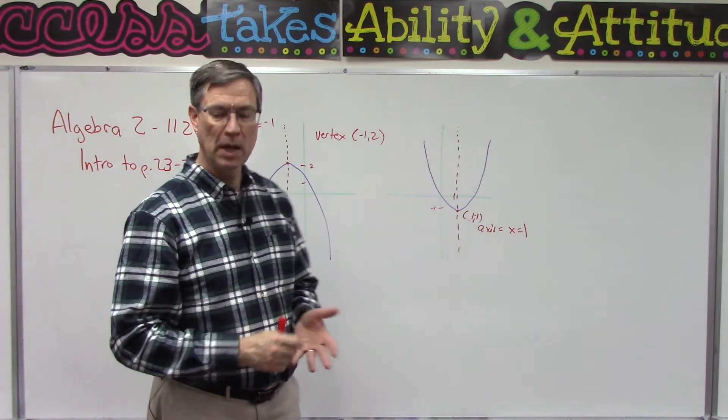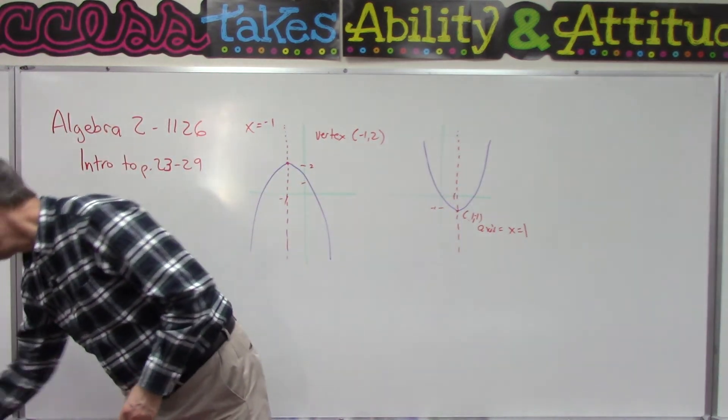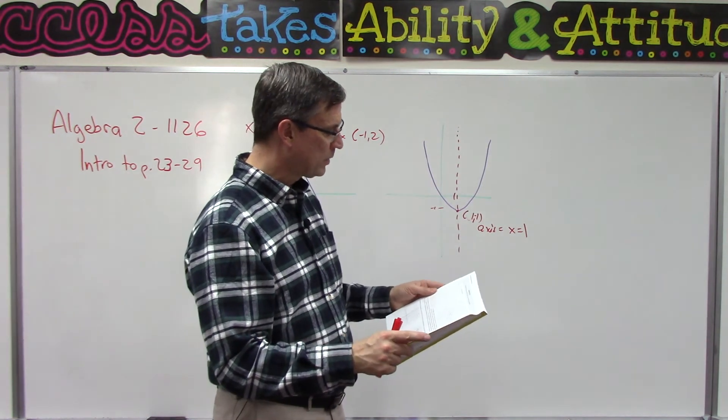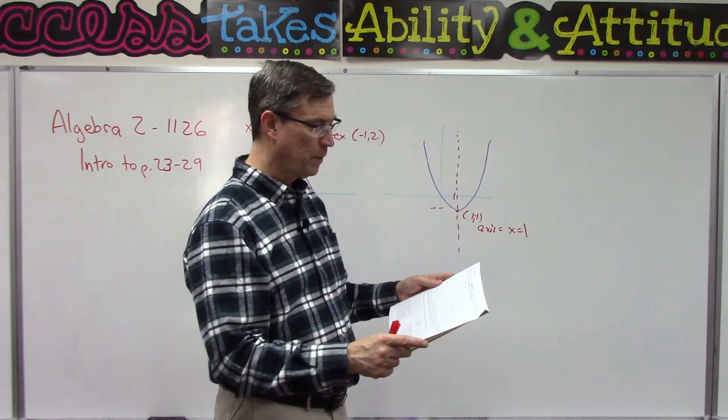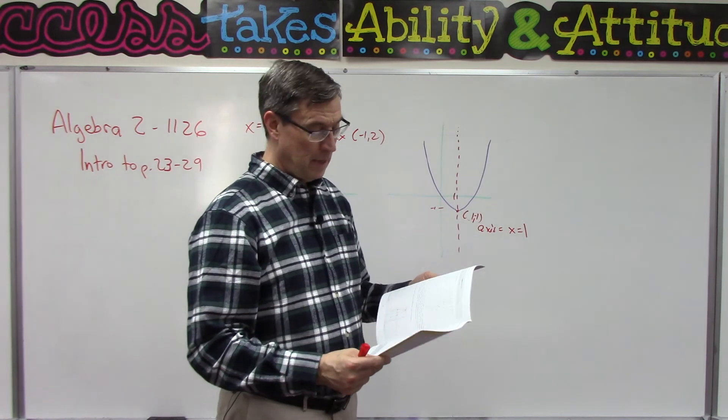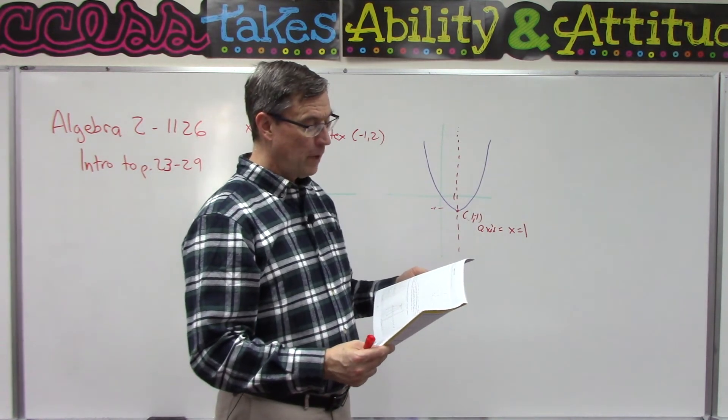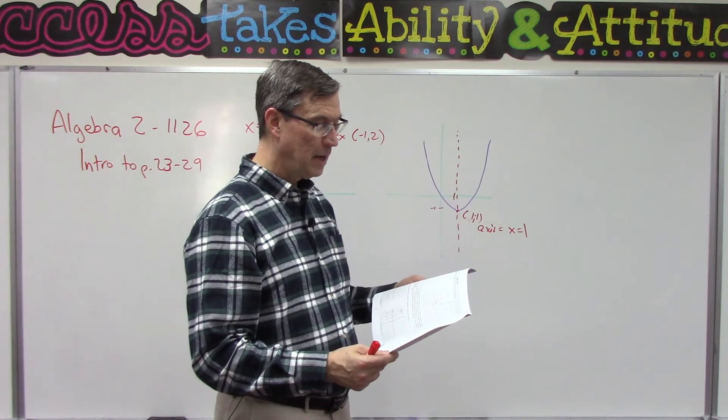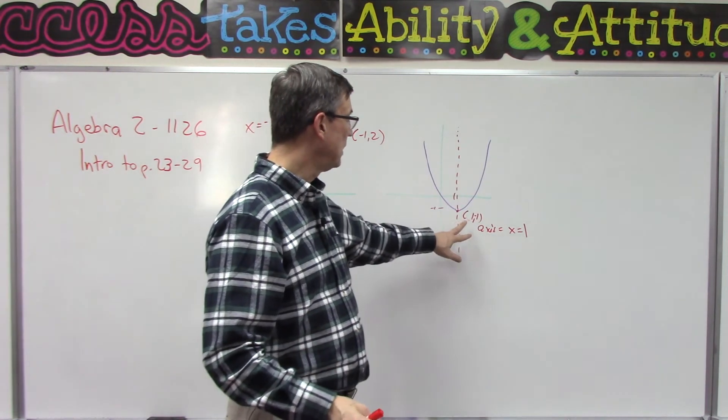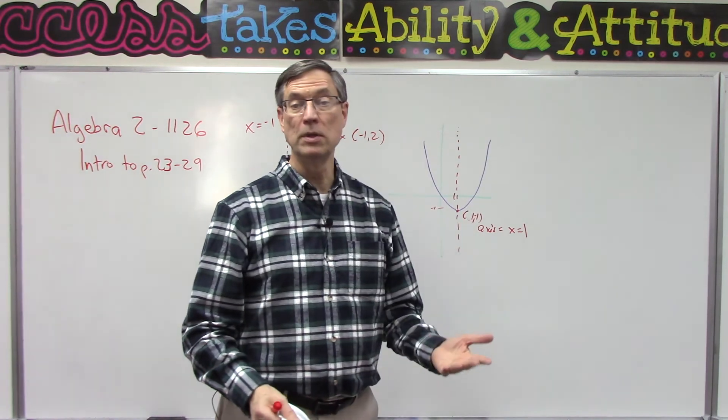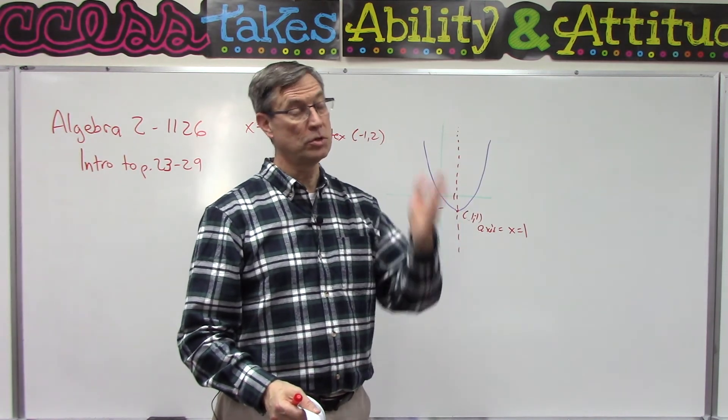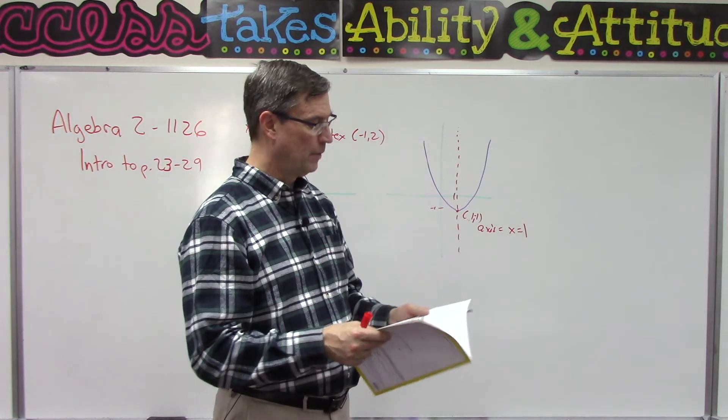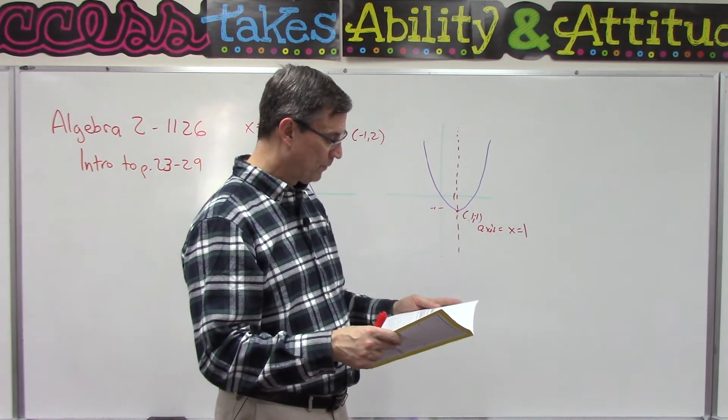The axis of symmetry and the vertex is covered on page 26. Again, you're just going to plug in some values for x, solve for y, graph it, and then identify the axis of symmetry and the vertex. You really do that just by looking at it—you should be able to just identify it by observing. They only give you three of them to practice that.